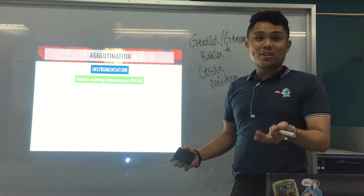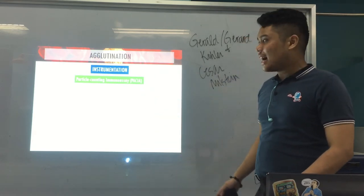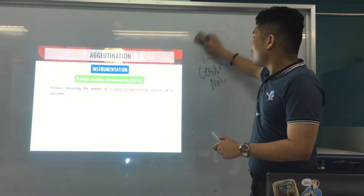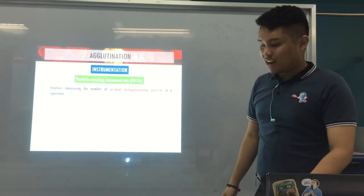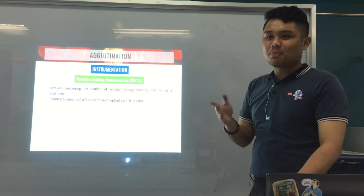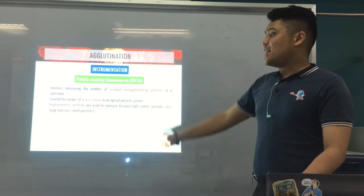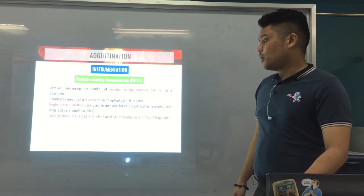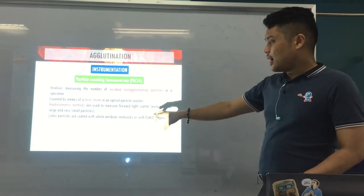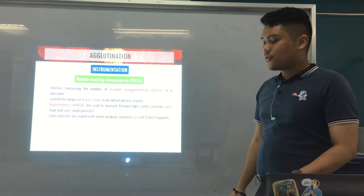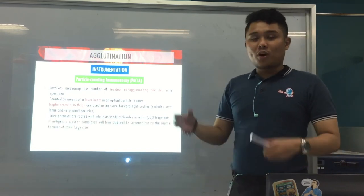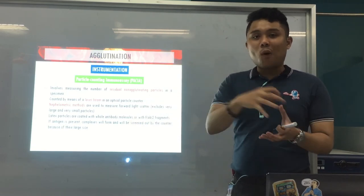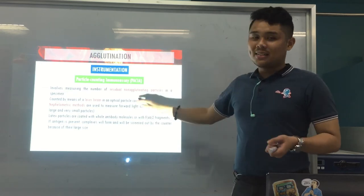Now we go to instrumentation — how do we measure agglutination? We have what we call the Particle Counting Immunoassay, or PACIA. What it does is it measures unagglutinated particles using laser beams — it's spectrophotometric in a way. It uses the nephelometric method, where light passes through at different angles.